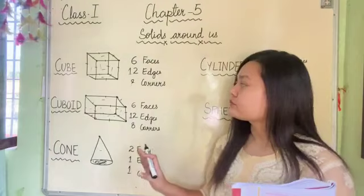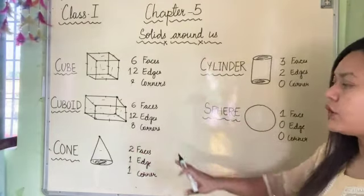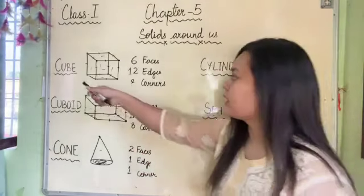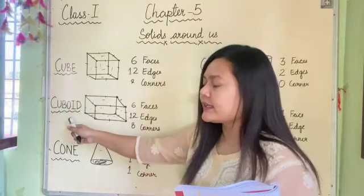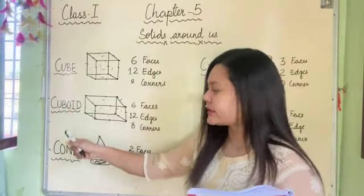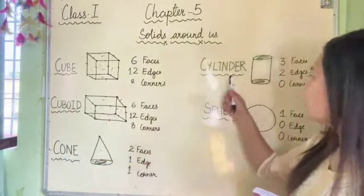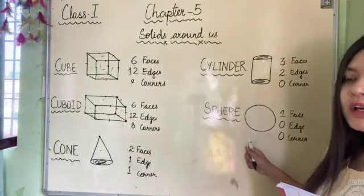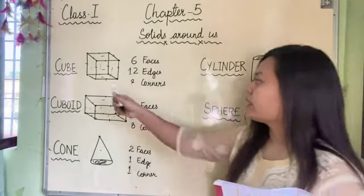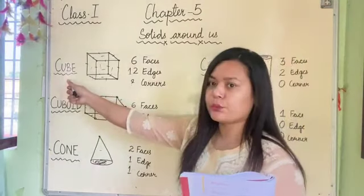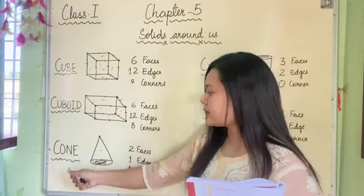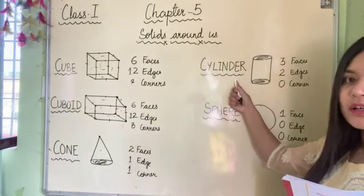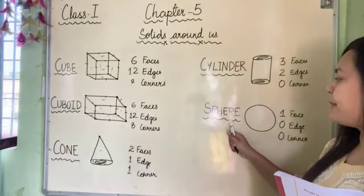Let's quickly recall all these solid shapes: cube, cuboid, cone, cylinder, sphere. Again - cube, cuboid, cone, cylinder, sphere.